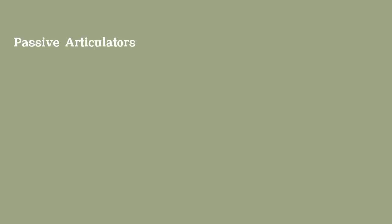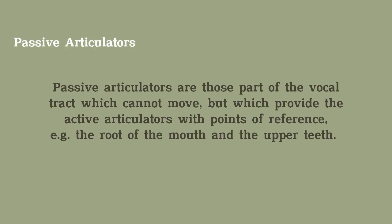In the place of articulation, two articulators come together to produce sounds, but actually one of them stays in place and one of them moves toward the other. The one that stays in place is called the passive articulator. Passive articulators are those parts of the vocal tract which cannot move but which provide the active articulators with points of reference — for example, like the roof of the mouth and the upper teeth.